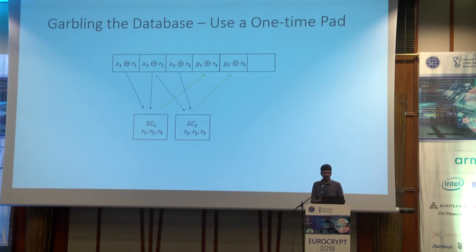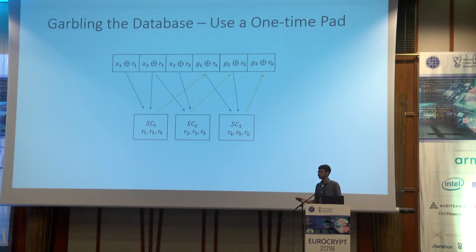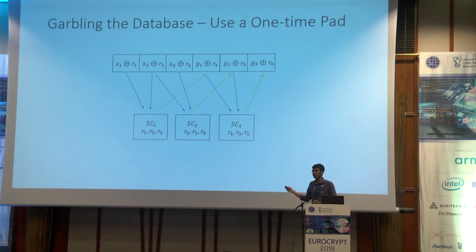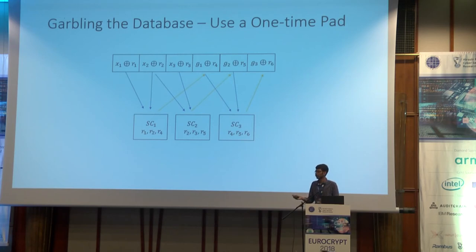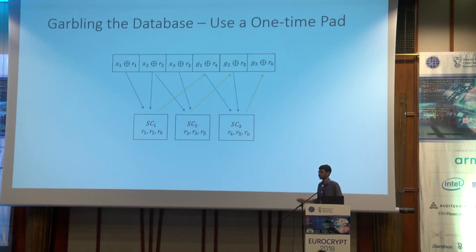Other step circuits do the same. Given this database, it just contains masked values of the input and intermediate bits. The locations accessed by each step circuit are fixed — not chosen dynamically — so we can hardwire the input and output masks in every step circuit. We have now seen how to garble the database; let me explain how to garble these step circuits.